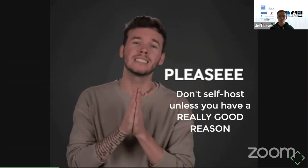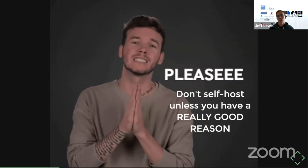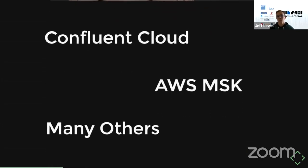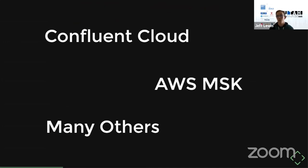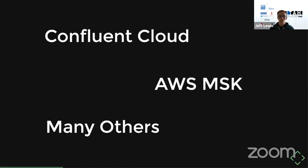If you're just getting started, you'll be better off going with cloud providers. The most common one you'll hear people using is Confluent Cloud. AWS also has a managed Kafka called MSK, and there are many others — just Google 'managed Kafka' and you'll see a whole bunch. Depending on your use cases, you can weigh the pros and cons. Unless you're pretty sure you know what you're getting into, I'd recommend going the managed route.